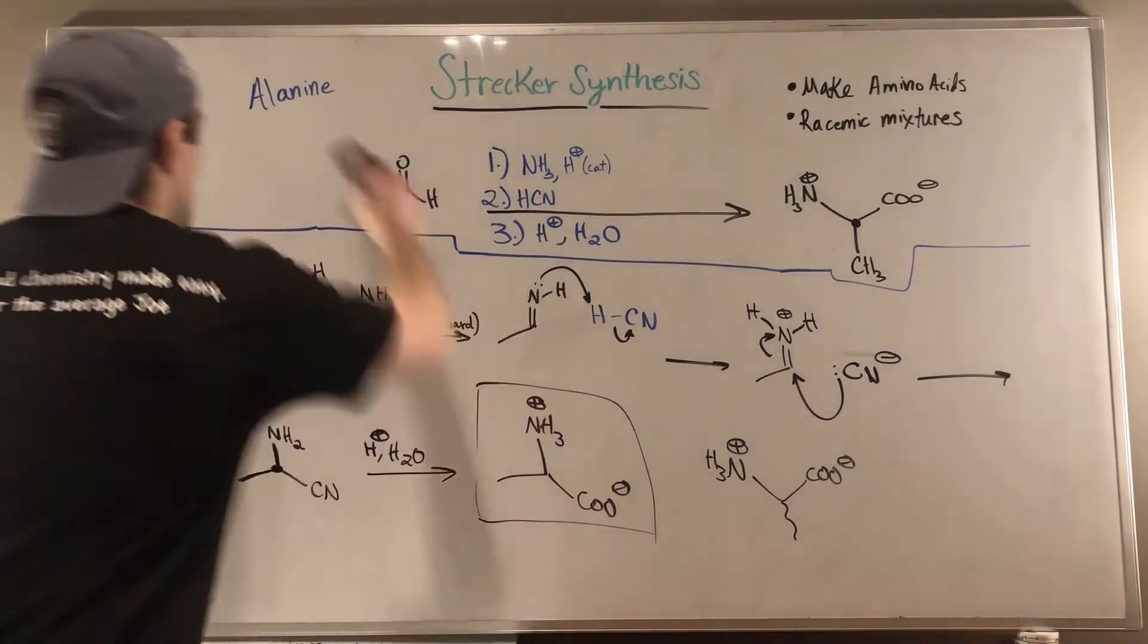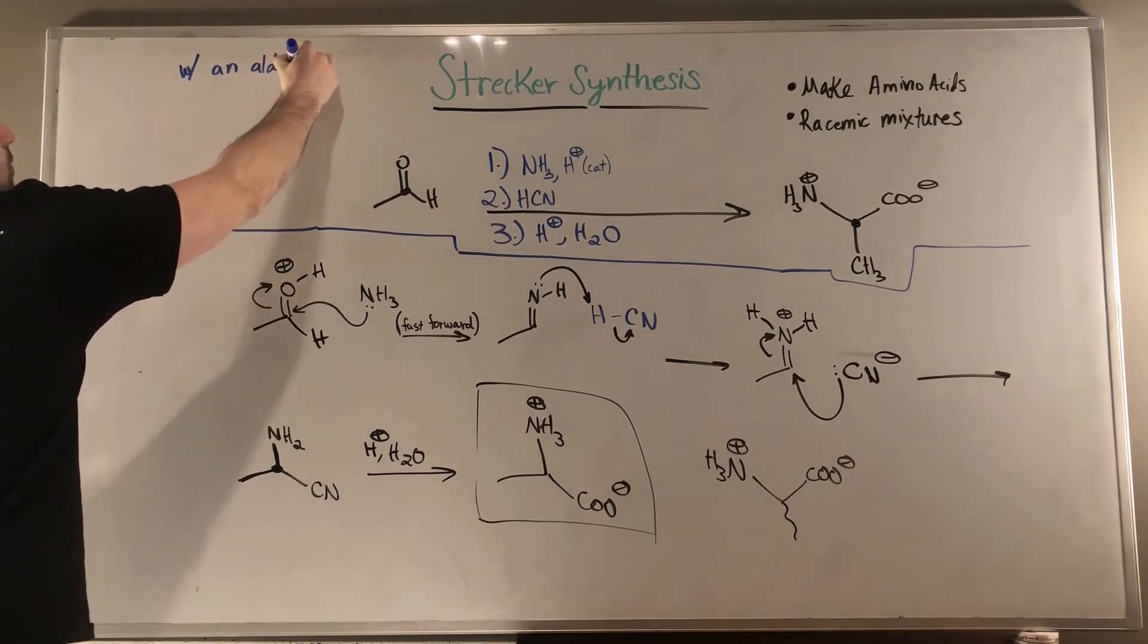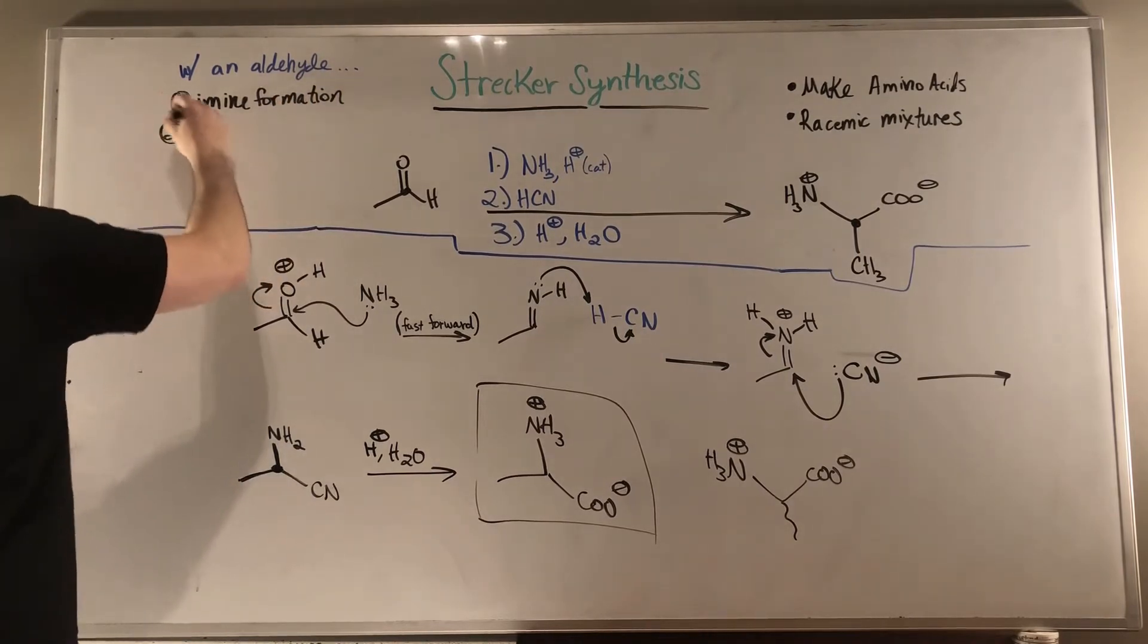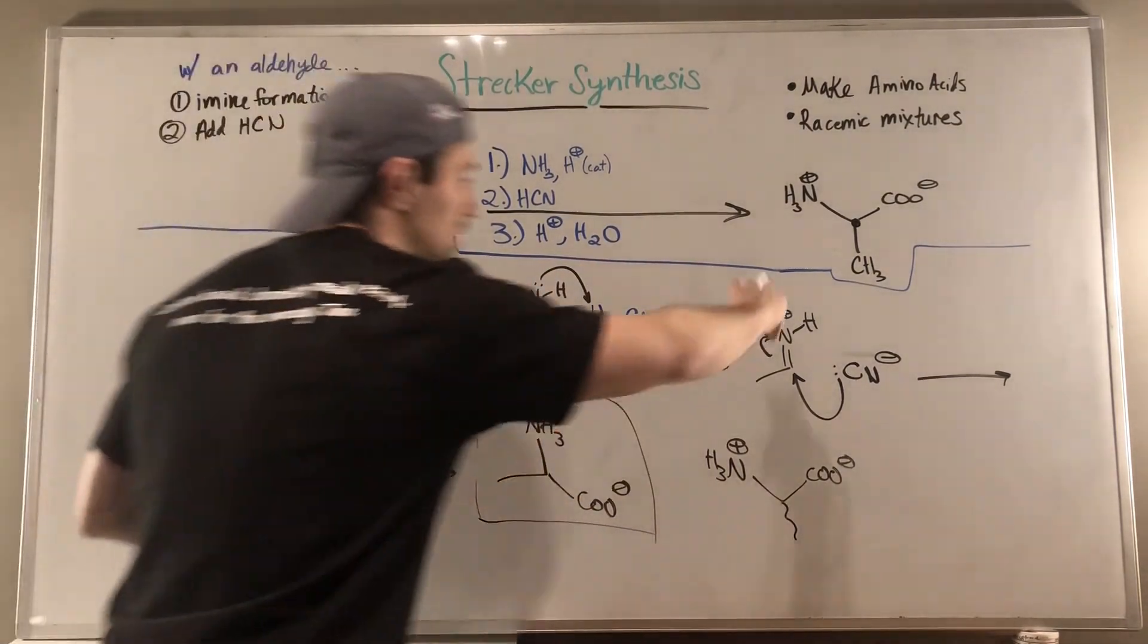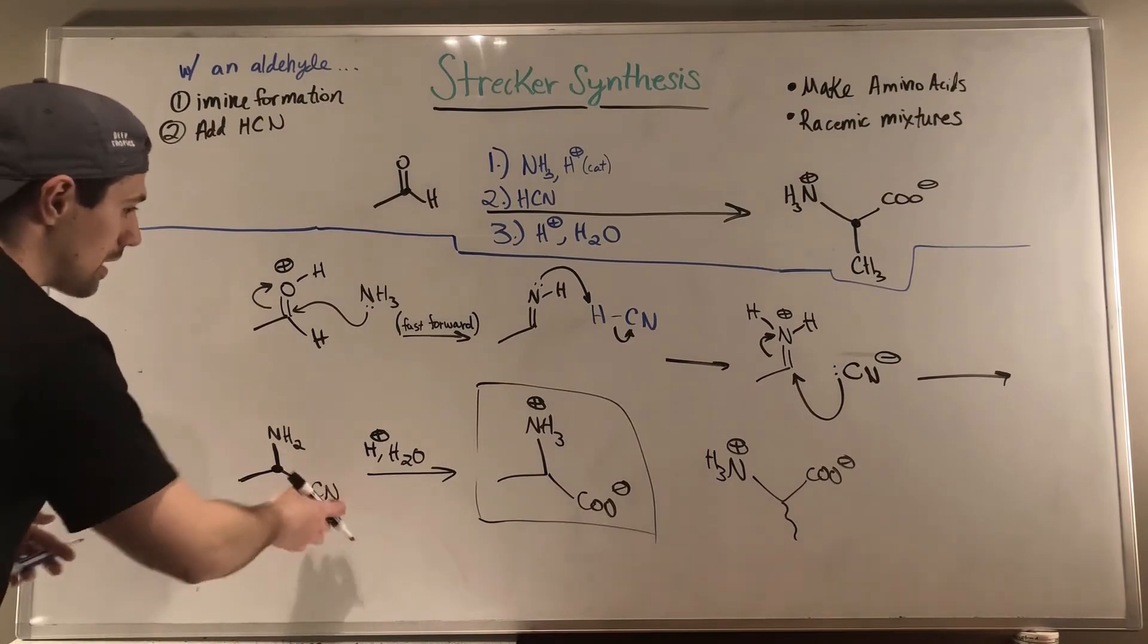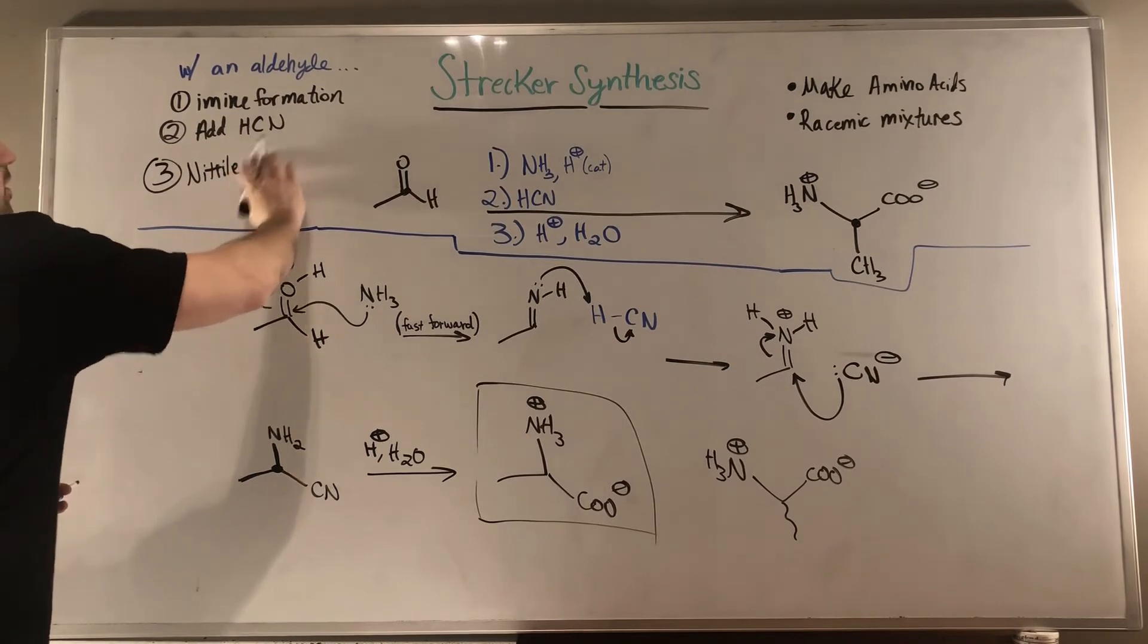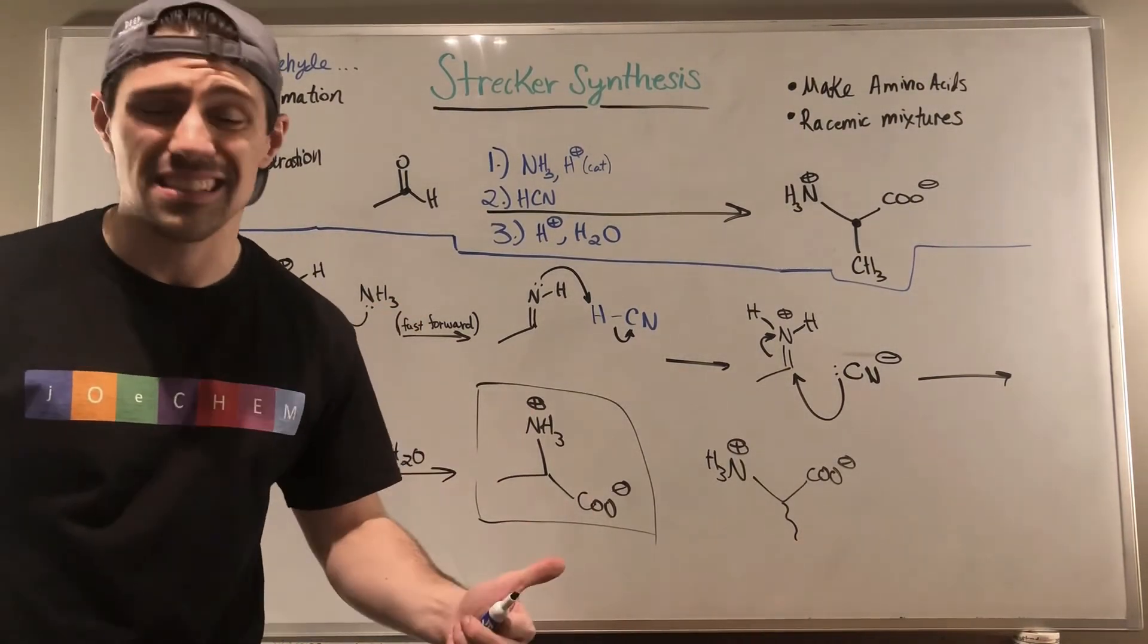If you wanted to almost write it out in steps, it's with an aldehyde, do imine formation, add hydrocyanic acid to do your imine formation, then you protonate that nitrogen, you attack with cyanide. That sticks it on. That gives you your amine. Then all you need to do is just take your nitrile and hydrolyze it to a carboxylic acid. So then you can just do nitrile hydration. So it's super simple. Let's just do one more. Let's make glycine and we'll call it a day.